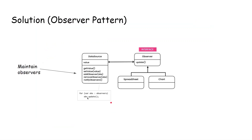To solve this problem we can use the observer pattern. The data source class has a value, a getter and setter, and also add and remove observer methods. This is where we maintain who is subscribing to this object. Every time the value changes, we call notify observers, which iterates all the observers and publishes the value. The observer interface has an update function so that any concrete observer — like spreadsheets or charts — can implement it and receive updates whenever the data source value changes.